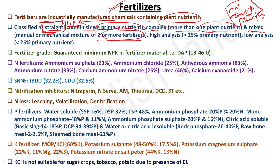High analysis fertilizer means the total primary nutrient content exceeds 25%. Low analysis fertilizer means it is less than 25%. For example, SSP (single super phosphate) contains only 16% P₂O₅ — less than 25% — so it is a low analysis fertilizer. DAP contains 18% N plus 46% P₂O₅, totaling more than 25%, making it high analysis. Urea at 46% nitrogen is also a high analysis fertilizer.